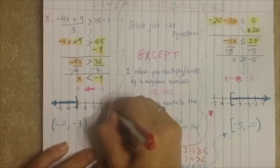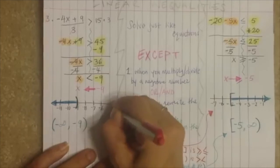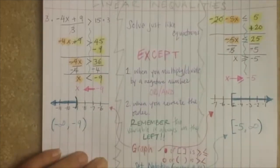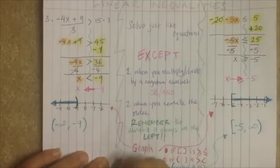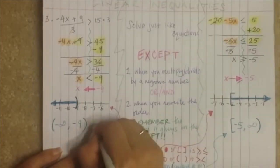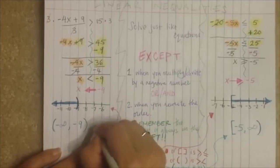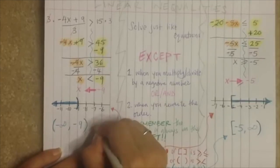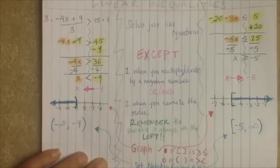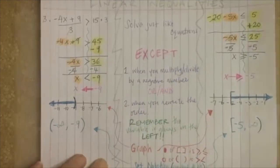In interval notation, it's going to be parentheses from negative infinity to negative 9 with a parenthesis. Remember, you always start with the smallest number, so you don't say negative 9 to negative infinity — negative infinity is the smallest number, so it comes first. That's how you write set notation.